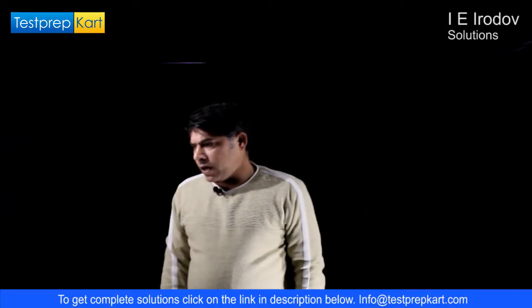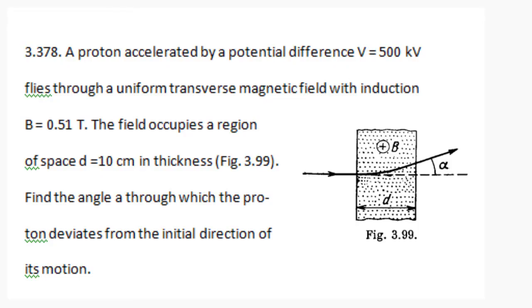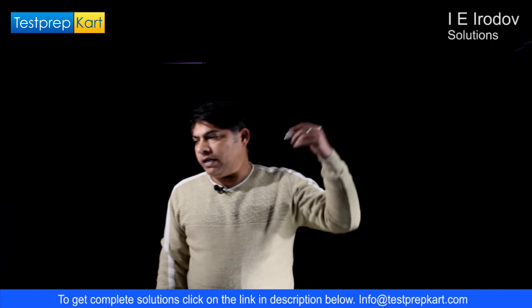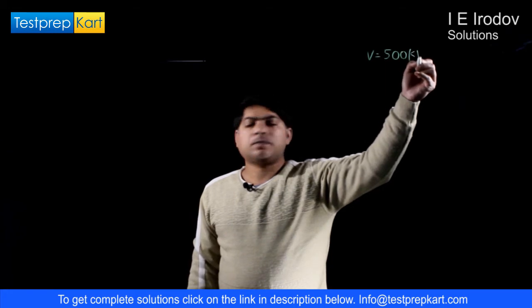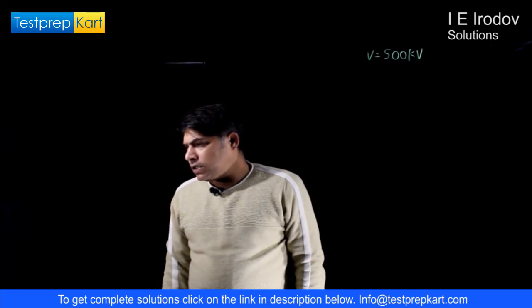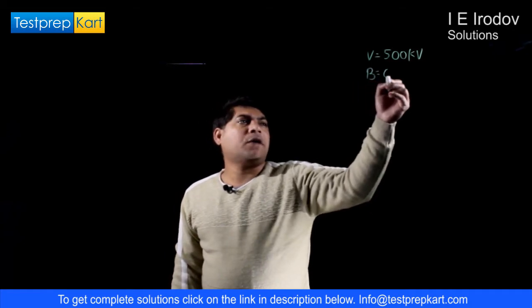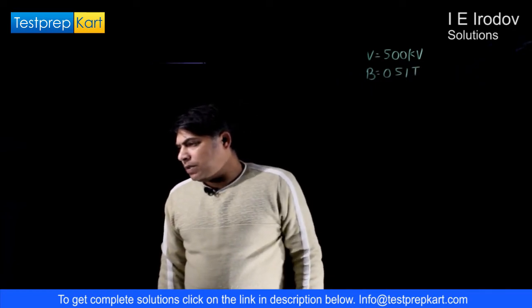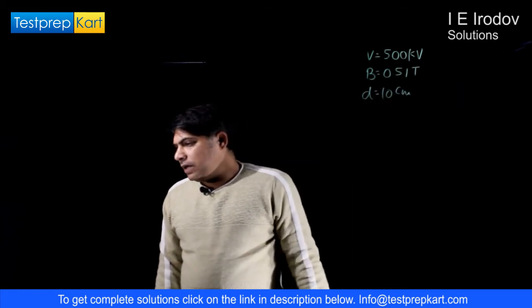Question number 3.378. A proton accelerated by potential difference V equals 500 kV flies through a uniform transverse magnetic field with induction B equals 0.51 T. The field occupies region of space D equals 10 cm, and a figure is also given.